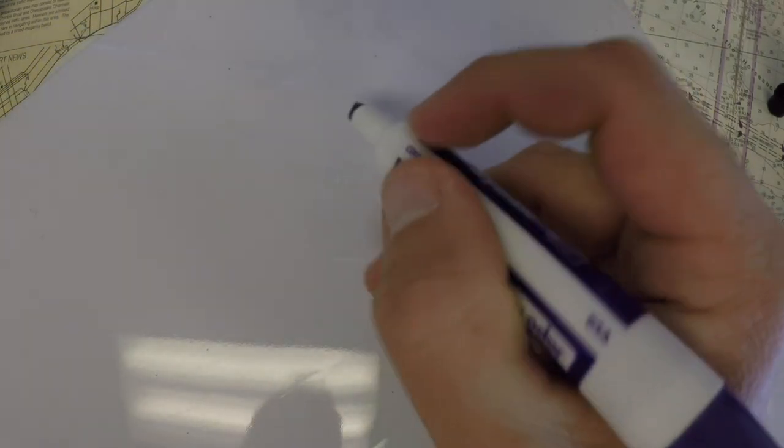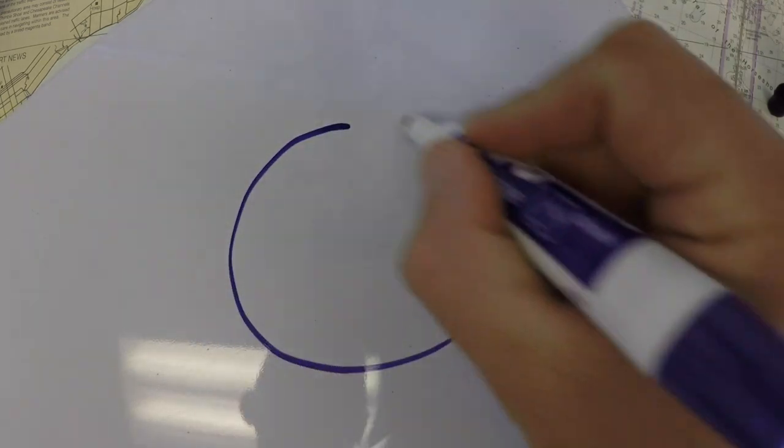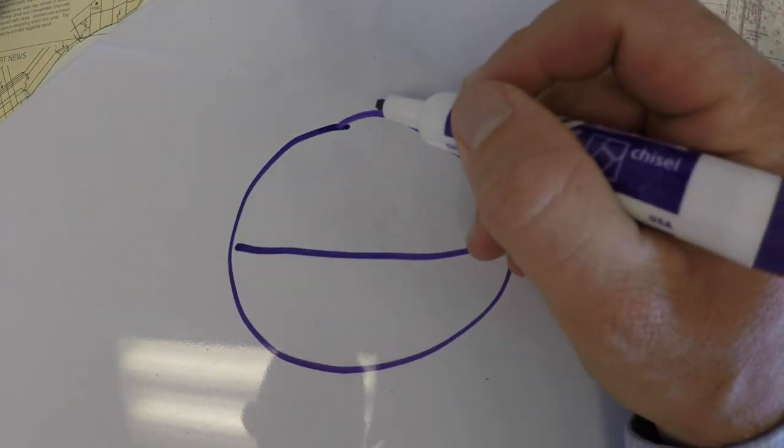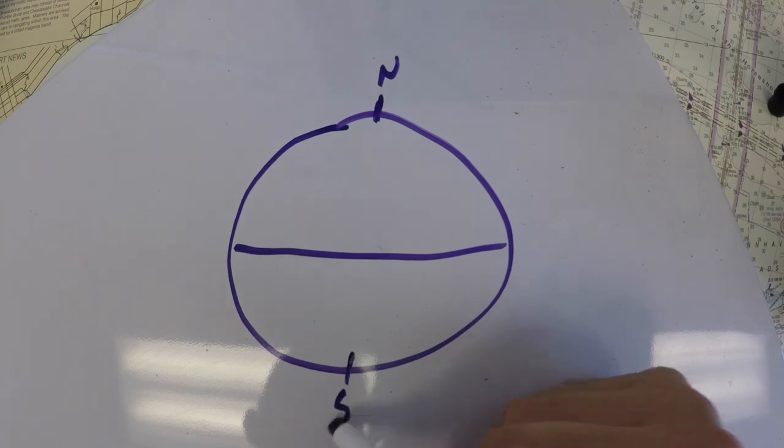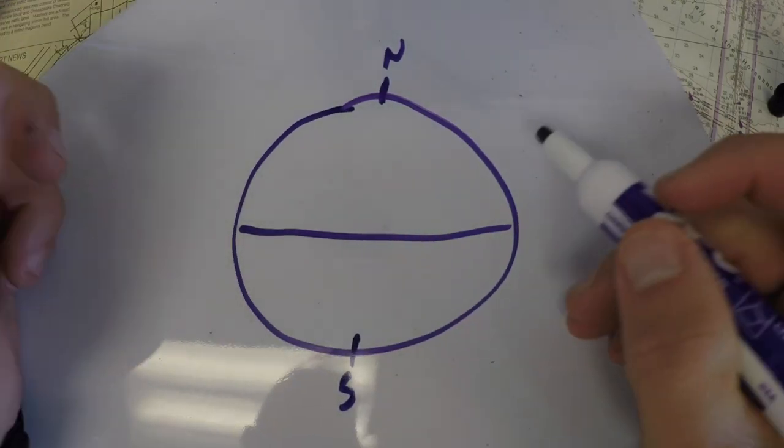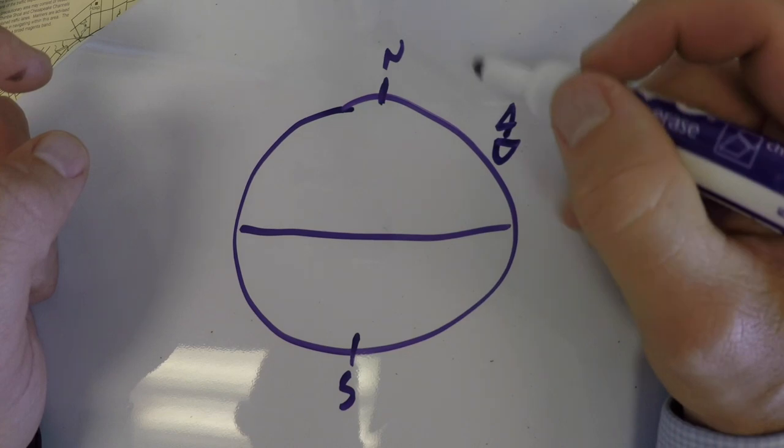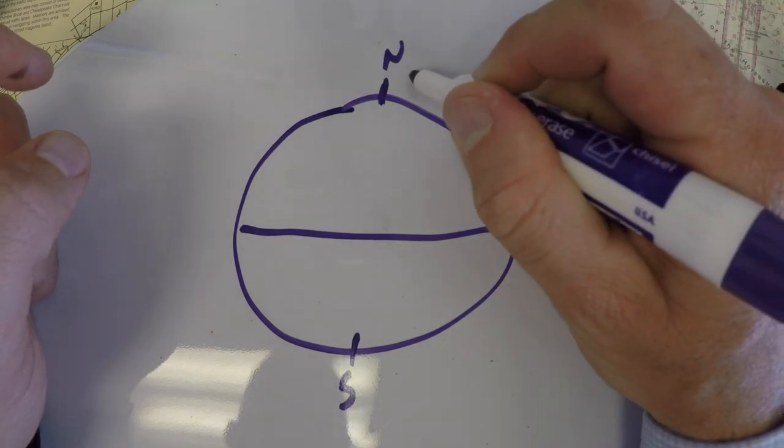However, just to kind of explain what's happening there is we're saying that normally on the Earth, there's a magnetic north pole and a magnetic south pole. And if your ship is somewhere up in the northern hemisphere, you may be thinking that your magnetic compass points to north.